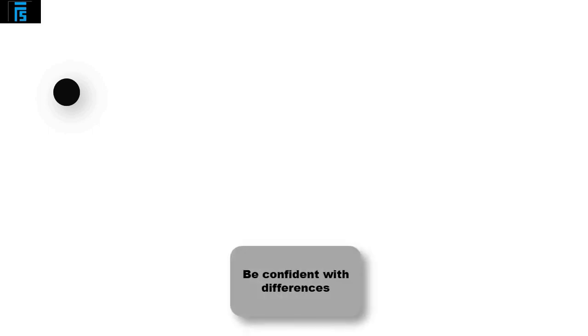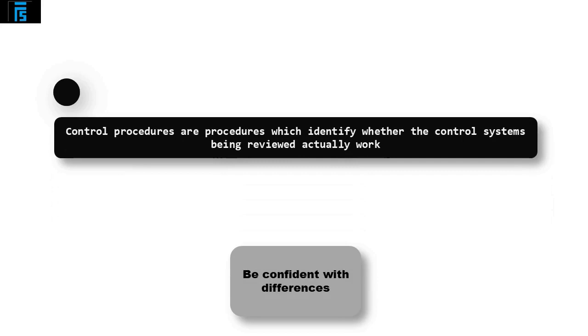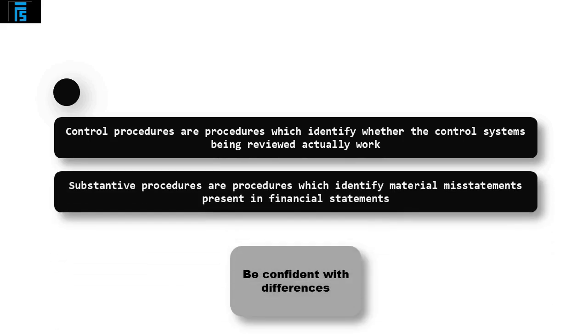There is a clear difference between the two, and to be successful in an exam question you must be confident with the differences. Control procedures identify whether the control systems being reviewed actually work. Substantive procedures identify material misstatements present in the financial statements, assisting the auditor in giving an opinion on whether the financial statements are true and fair.